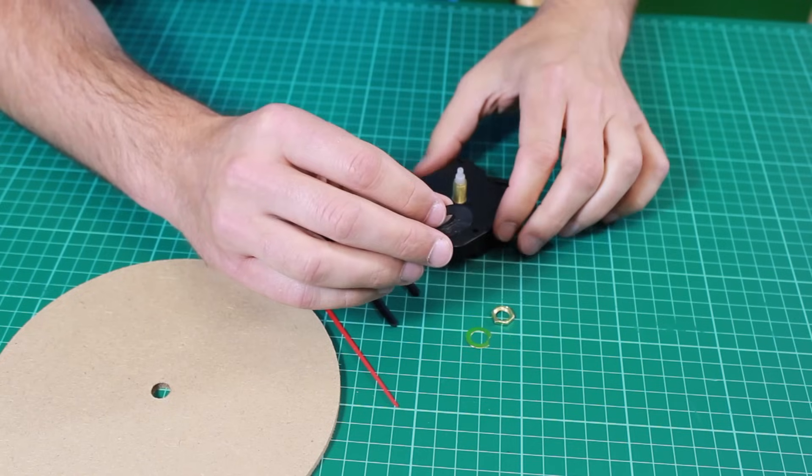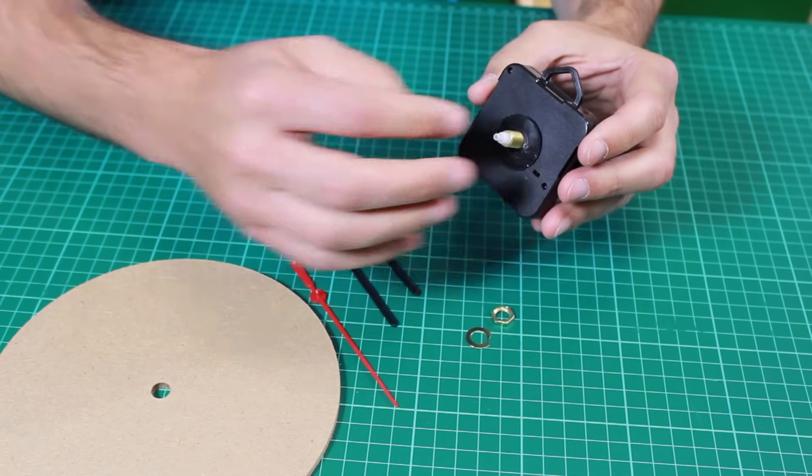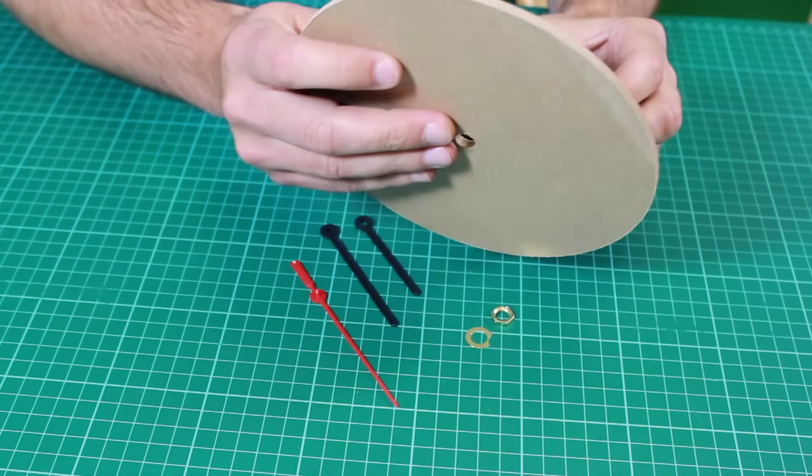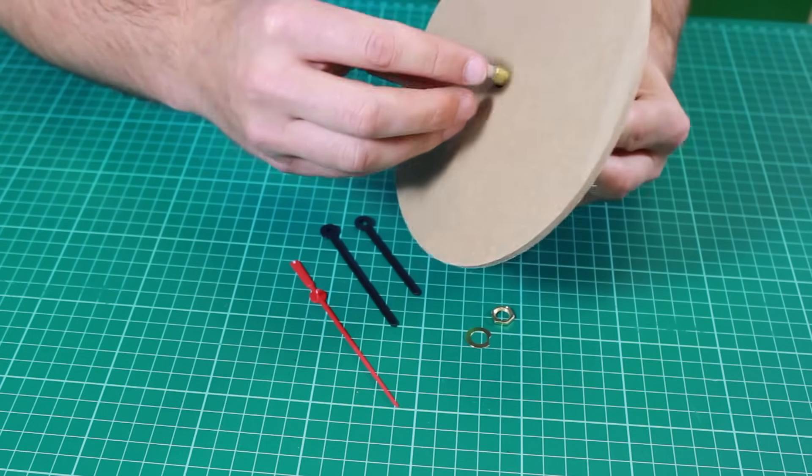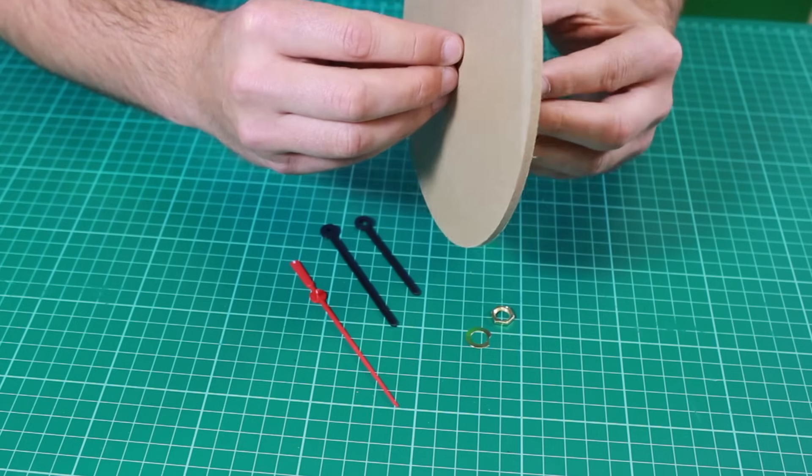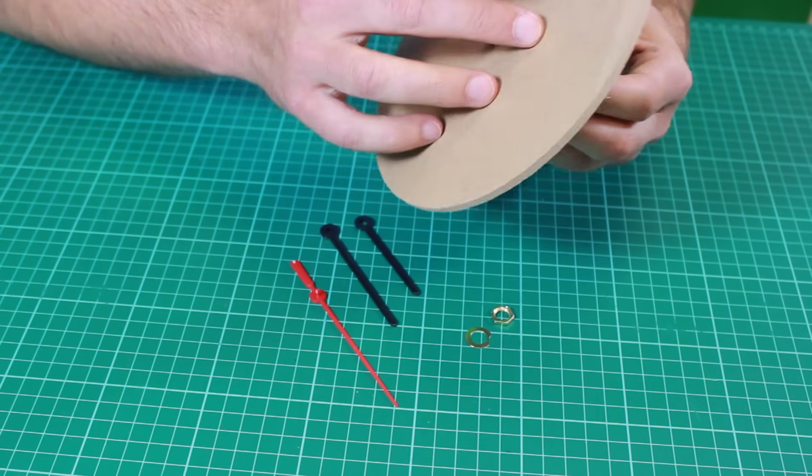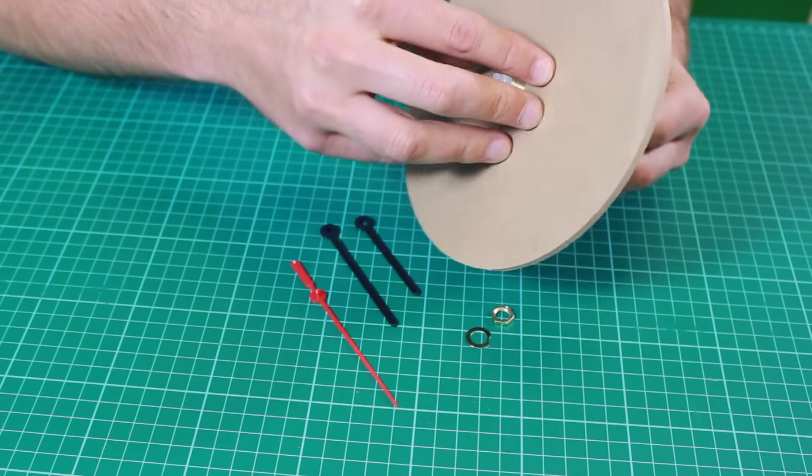So first of all, we take the clock movement and then we use this rubber washer which goes over the top. And then we push the spindle through the hole in the clock face. And the purpose of the rubber washer is to, when it's tightened, to stop this face turning. So that goes on first.